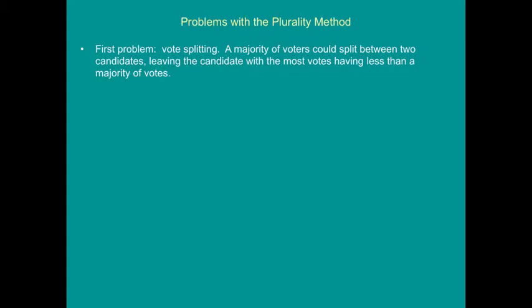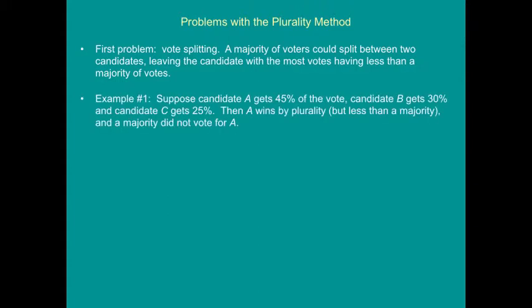The first problem: vote splitting. A majority of voters could split between two candidates, leaving the candidate with the most votes having less than a majority. Example 1: suppose candidate A gets 45% of the vote, candidate B gets 30%, and candidate C gets 25%. Then A wins by a plurality, but less than a majority. In fact, 55% of the voters chose somebody other than A. That's an example of vote splitting.